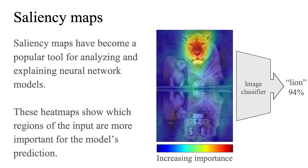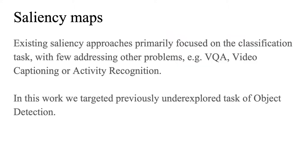Saliency maps have become a popular tool for analyzing and explaining neural network models. These heatmaps show which regions of the input are more important for the model's prediction. In this image, the lioness face is the most important area for this image being classified as a lion. Existing saliency approaches primarily focus on the classification task.